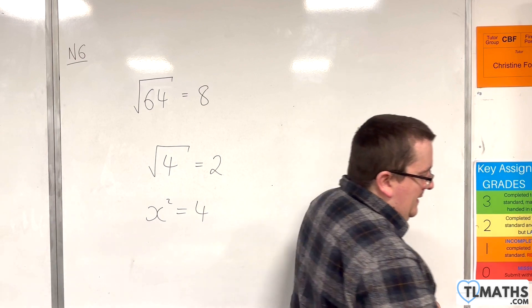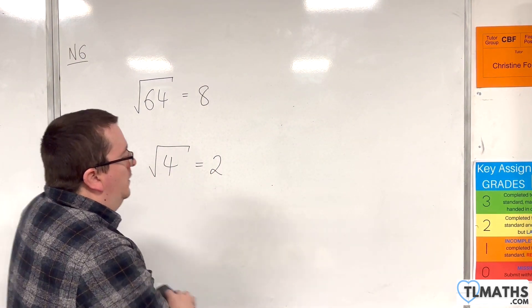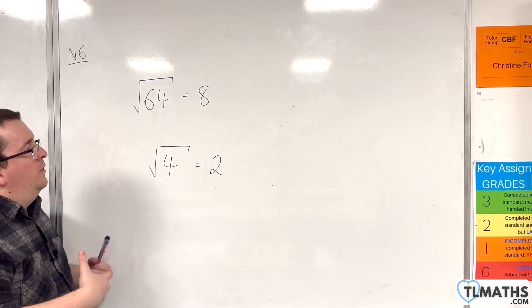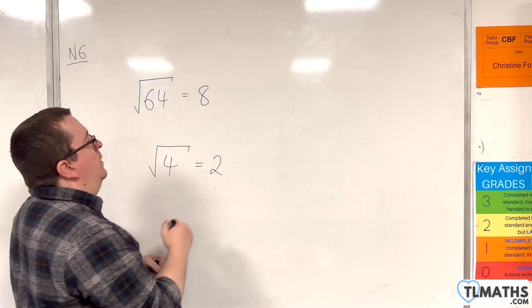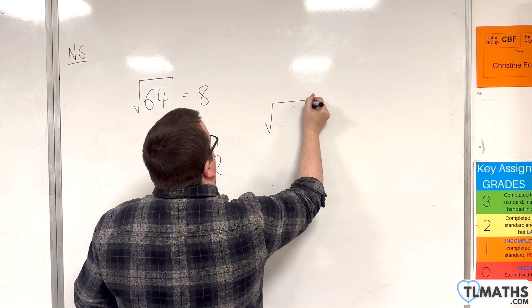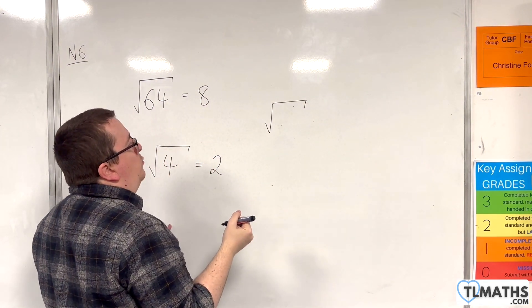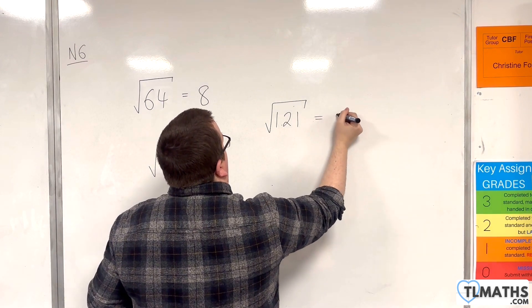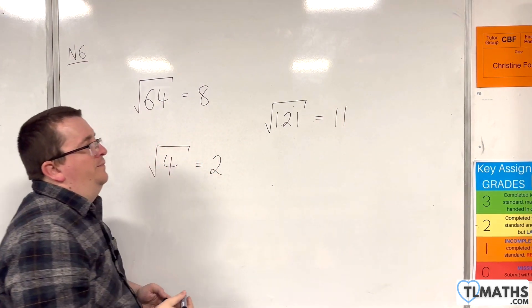So just be a little bit careful there. So what we need to be able to do is recognize the square number and its square root. So if I said, what is the square root of 121, you need to be able to write down that that is 11.